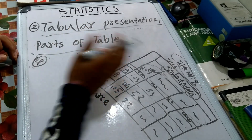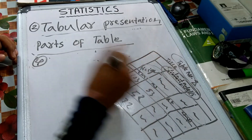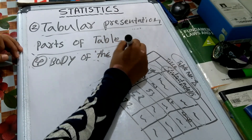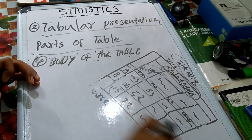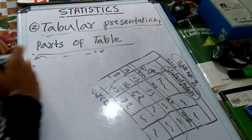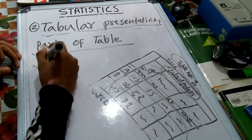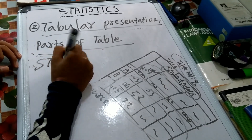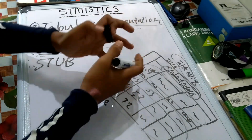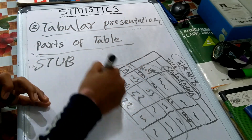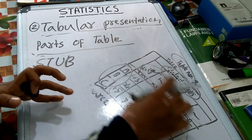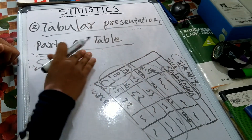The next part is the body of the table. The body of the table contains the data. Next, the stub — step one is important. Step one is to describe each row. The body is organized in cells.